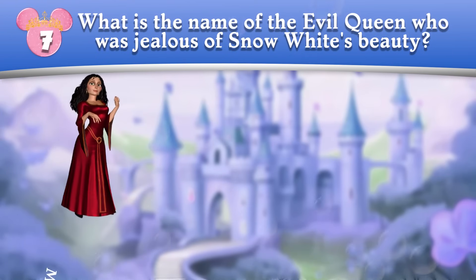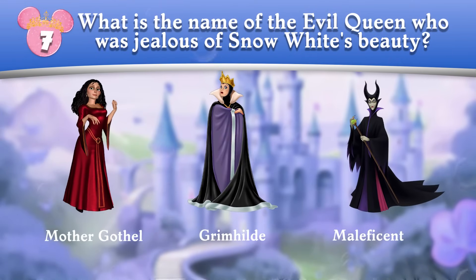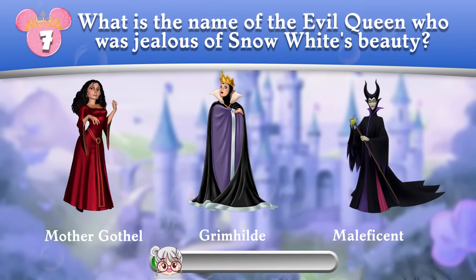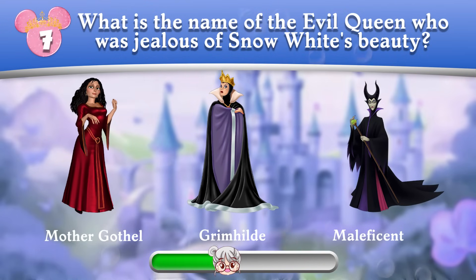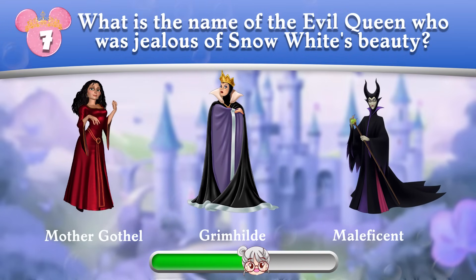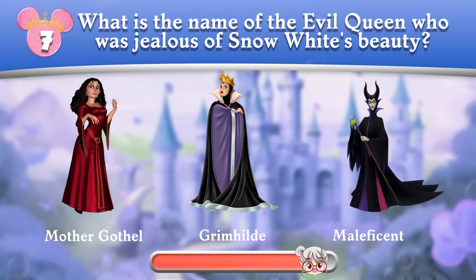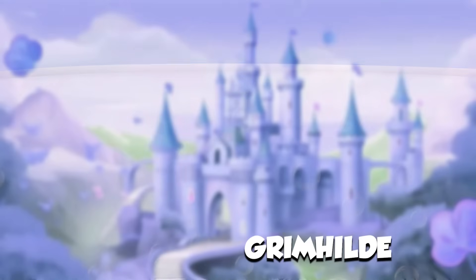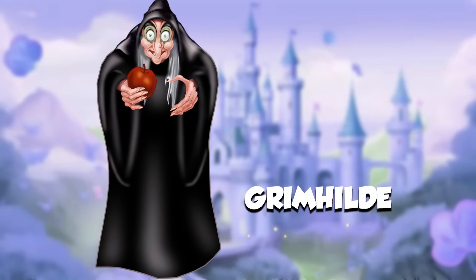Round 7: What is the name of the evil queen who was jealous of Snow White's beauty? She is Grimhilde!